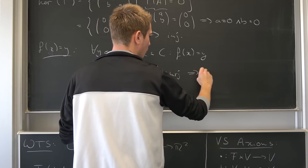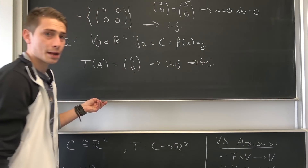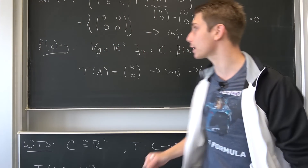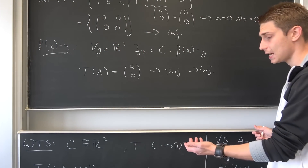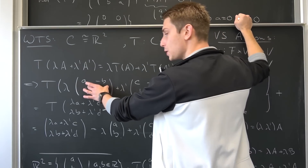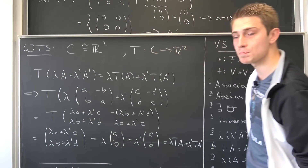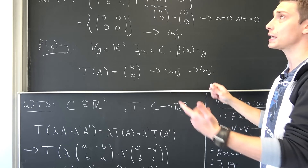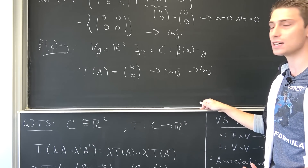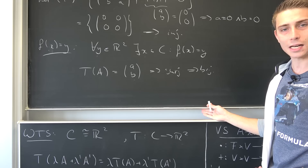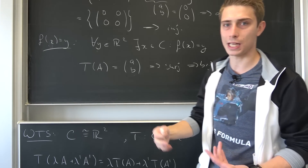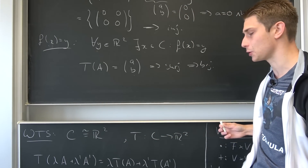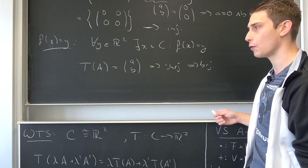Since T is both injective and surjective, it is bijective. Therefore we have a vector space isomorphism. We can take each and every matrix and give it a new name — the vector (a, b) — and then work with it.